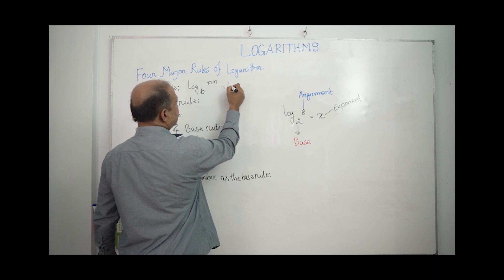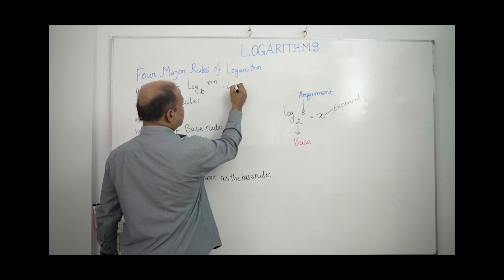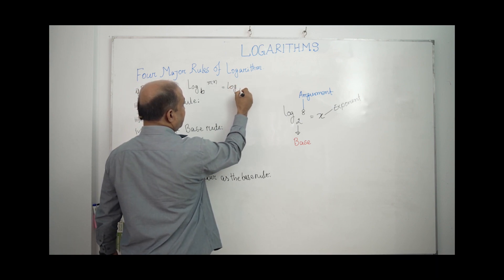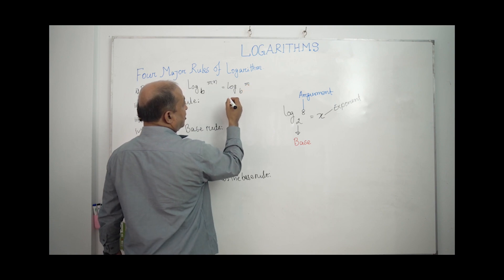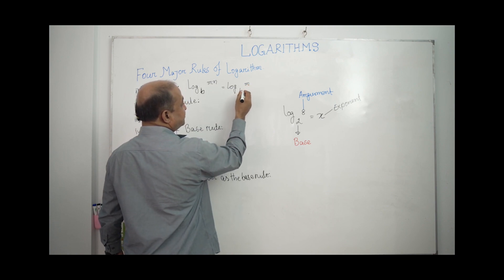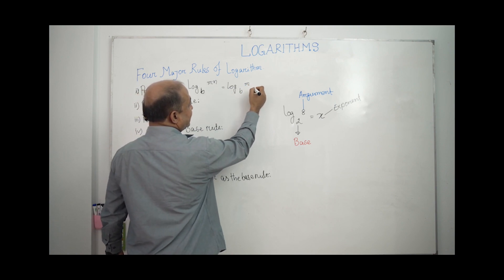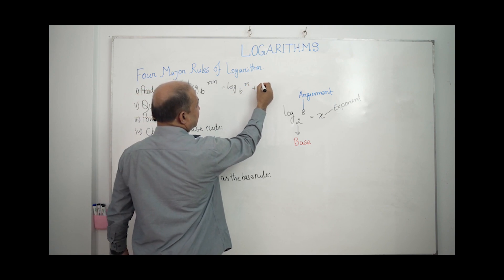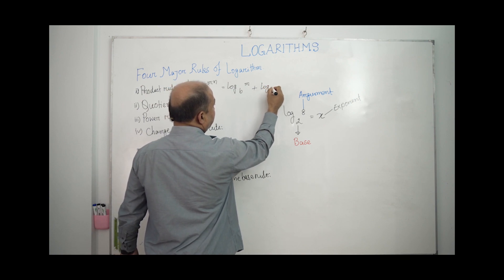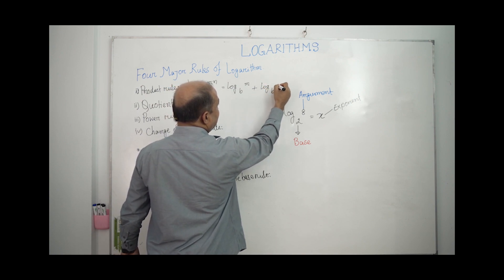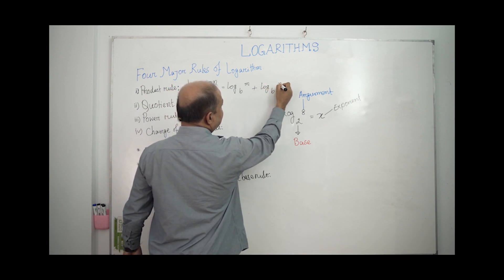The product rule states: log base B of M equals log base B of M plus log base B of N. When a log has factors multiplied together, we can separate them into individual logs added together.